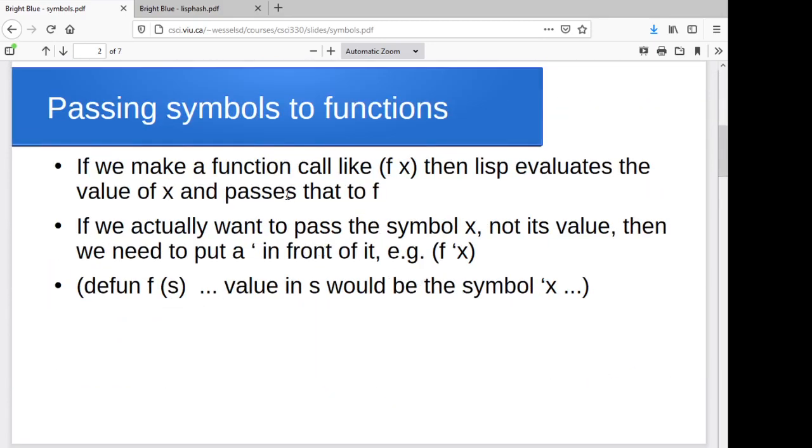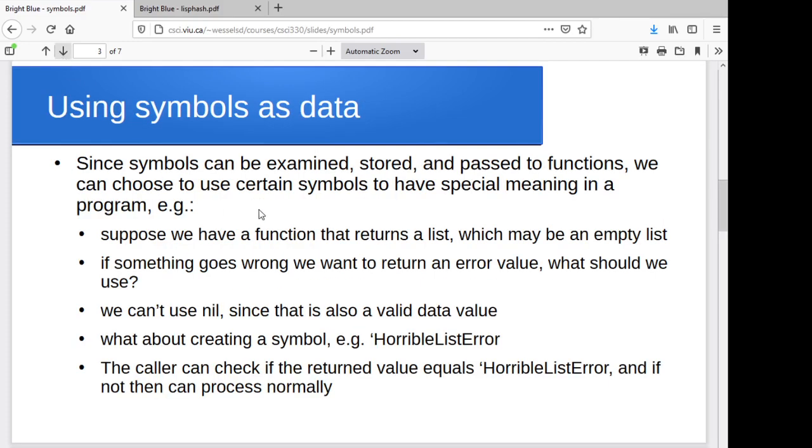First off, if we've got some function, we can say, I want to actually pass a symbol to it. Ordinarily, if I do a function called like f of X, then it's going to figure out what value variable X has and pass that value - it evaluates X and passes that. If I throw a quote in front of that, then I'm saying, don't evaluate X. Pass the symbol X, pass the identifier X, as data for the function to play with. Inside that function, we would actually have the name of X as a value we could play with.